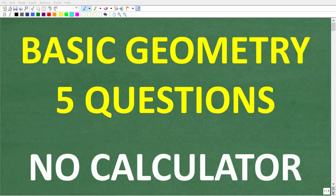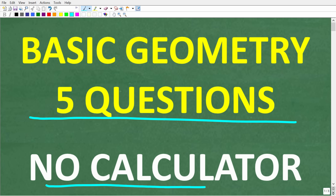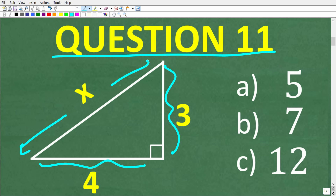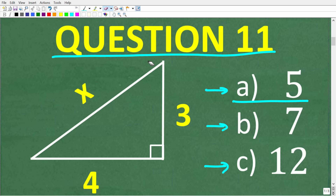Now let's start the final section — five basic geometry questions, no calculators. Question eleven: given a triangle with lengths 3, 4, and x, what is the length of x? Is it A: 5, B: 7, or C: 12? The correct answer is A, 5. This is a right triangle — indicated by the small square symbol meaning 90 degrees — and we have a Pythagorean triple: 3, 4, 5.